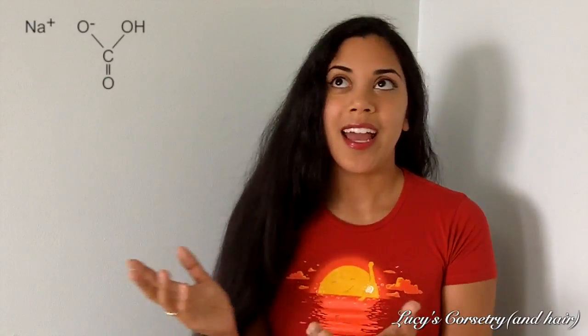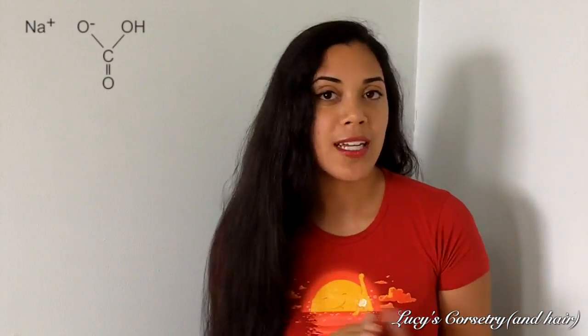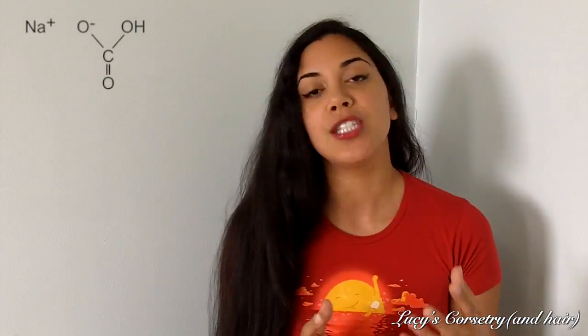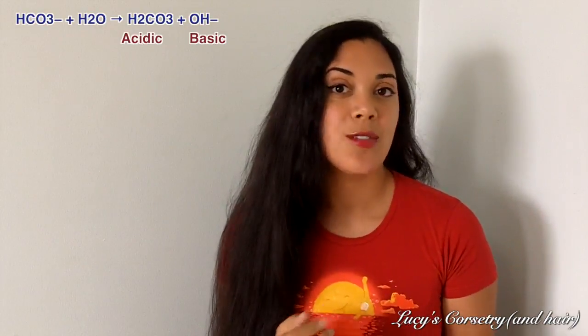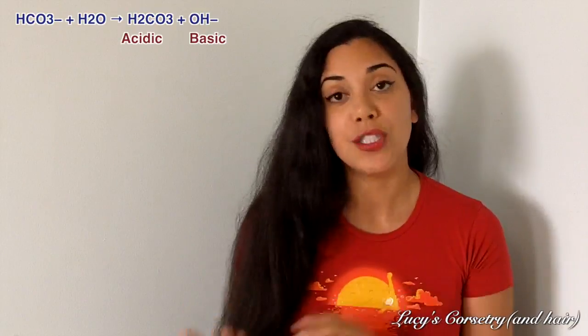First, baking soda is the common term for sodium bicarbonate, which is a salt. The positive ion is sodium and the negative ion is bicarbonate, with the chemical structure HCO3⁻. Sodium bicarbonate is amphoteric, so depending on the environment, it can act as either an acid or a base — it could release carbonic acid, which is more acidic, or it could release hydroxide, which is more basic.